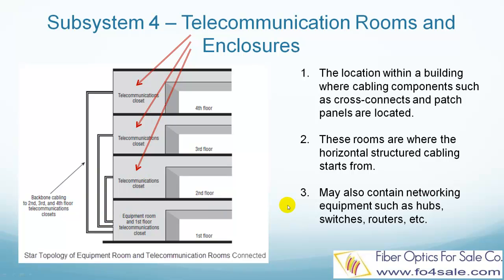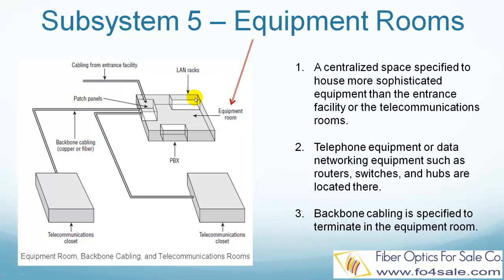The equipment room is a centralized space specified to house more sophisticated equipment than the entrance facility or the telecommunications rooms. Most often, telephone equipment or data networking equipment such as routers, switches, and hubs are located here. Backbone cabling is specified to terminate in the equipment room. This figure shows the equipment room.